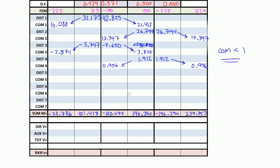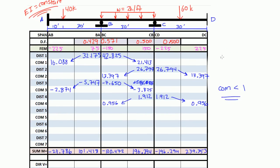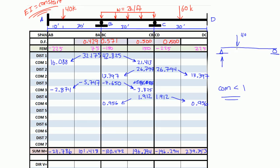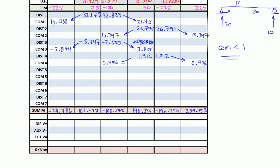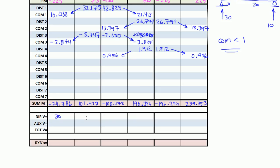The direct shear is the shear if we pretend that each span is just a simply supported beam. So for span AB, we had a 40 kip load. If we had just a simply supported beam, the reaction here is 30 and here is 10. Since this distance is 10 and this distance is 30, the reaction is 3/4 of 40, and the other reaction is 1/4 of 40. So the direct shear for span AB is 30 on the left and 10 on the right.